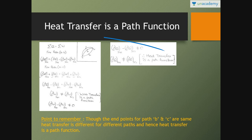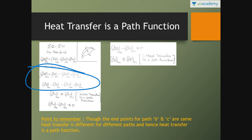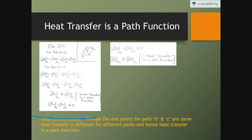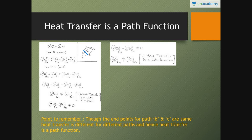To summarize the derivation: we applied sigma Q equals sigma W for cycles AB and AC separately, then subtracted. Since work transfer is a path function, the difference is non-zero. Though the endpoints of paths B and C are the same, the paths are different — hence heat transfer is also a path function.